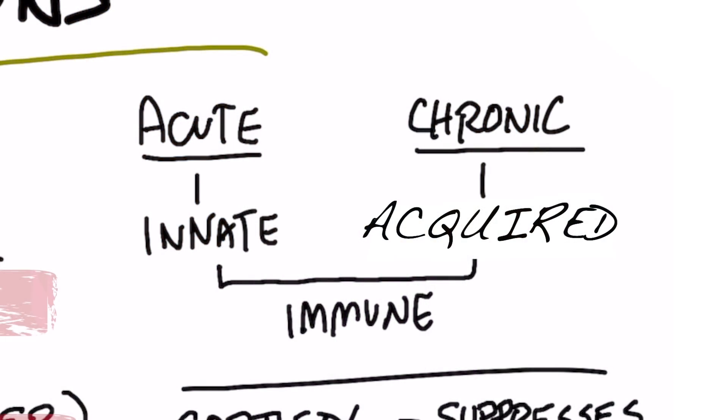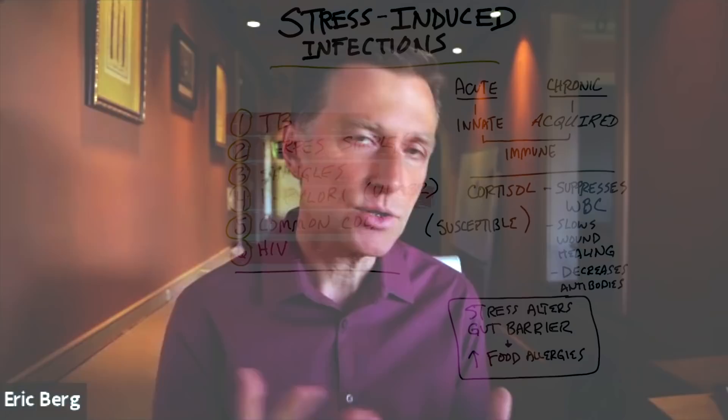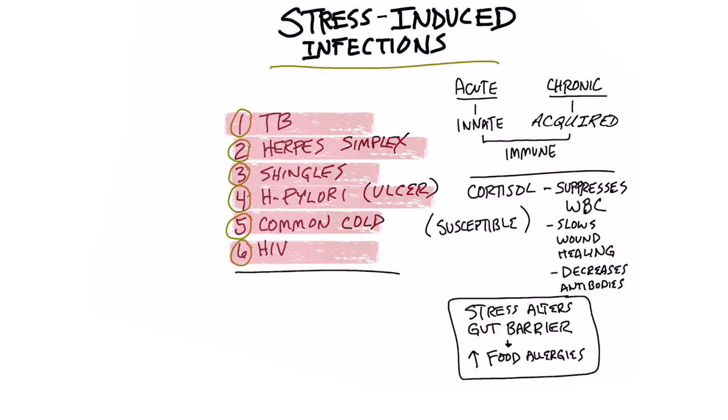You have acute stress and chronic stress. Acute stress affects the innate part of the immune system — the immune system you're born with, a more general immune system. Then you have the acquired immune system, which is more specific, targeting certain pathogens. That's something you develop through exposure, antibodies, and adapting to your environment. Chronic stress suppresses the acquired immune system more than anything.